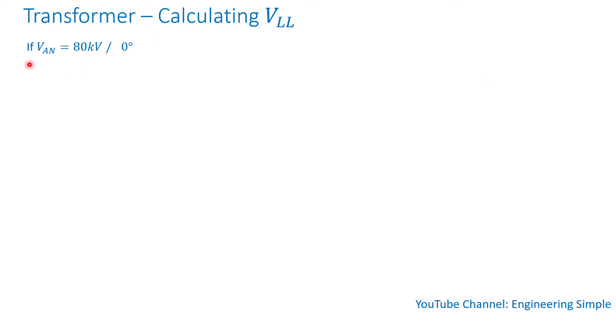Let's assume Van is equal to 80 kV at 0 degrees. So this is just the line-to-neutral voltage, and we would like to calculate the line-to-line voltage or VAB. Let's look at the sketch here.